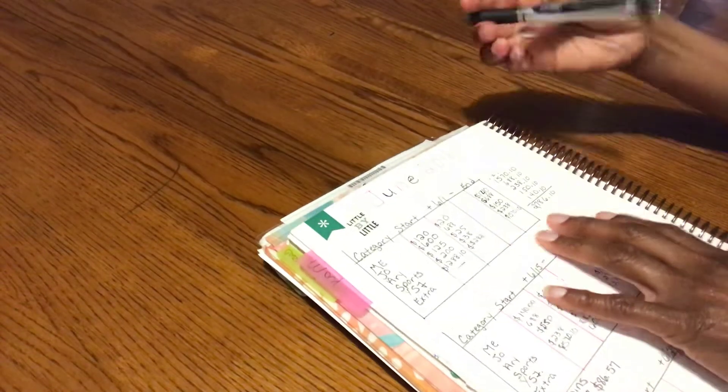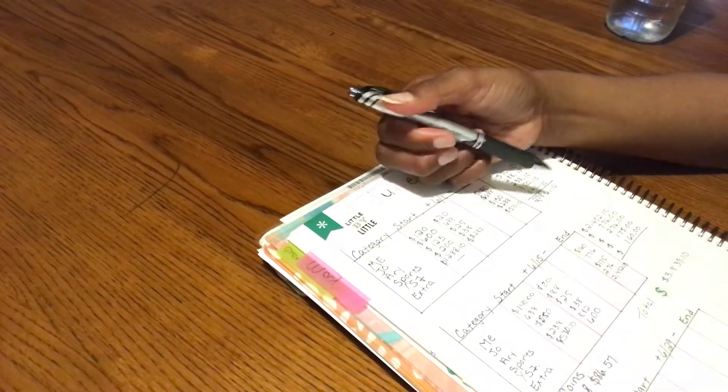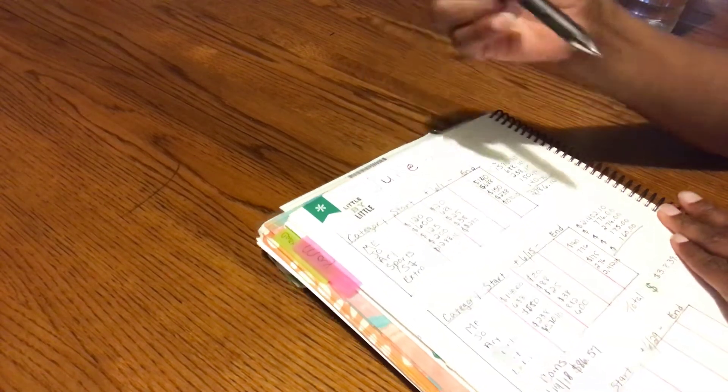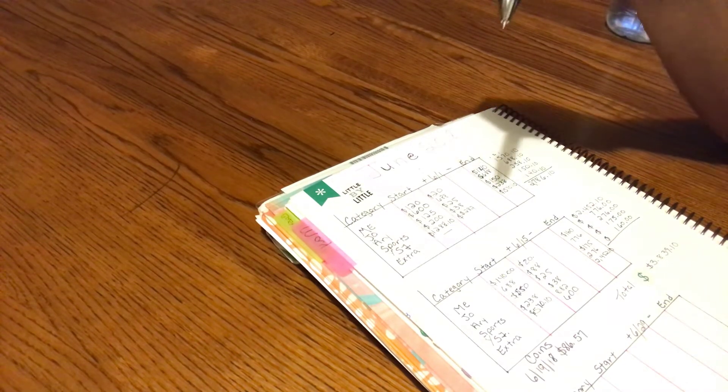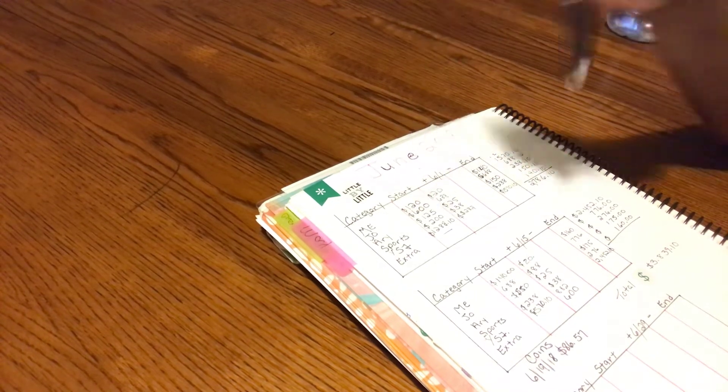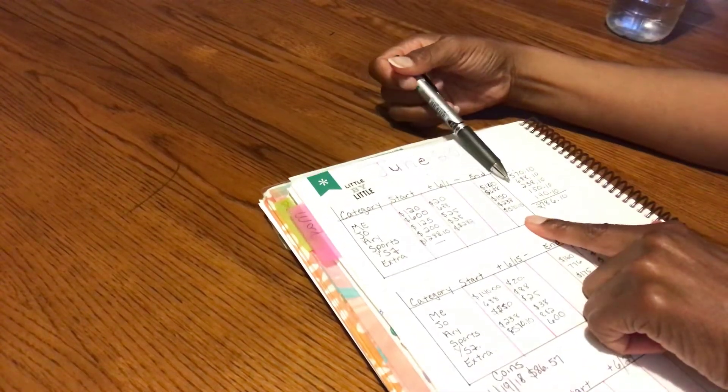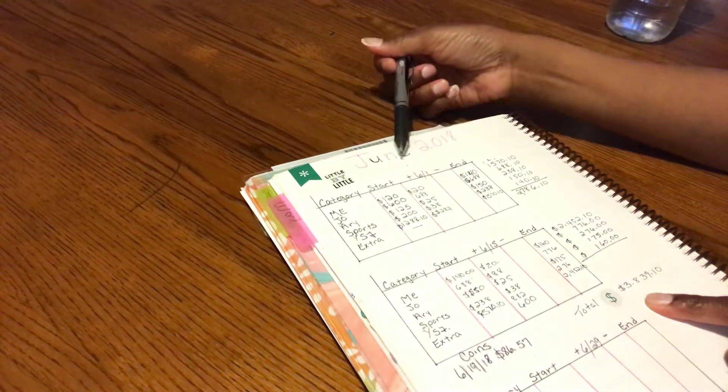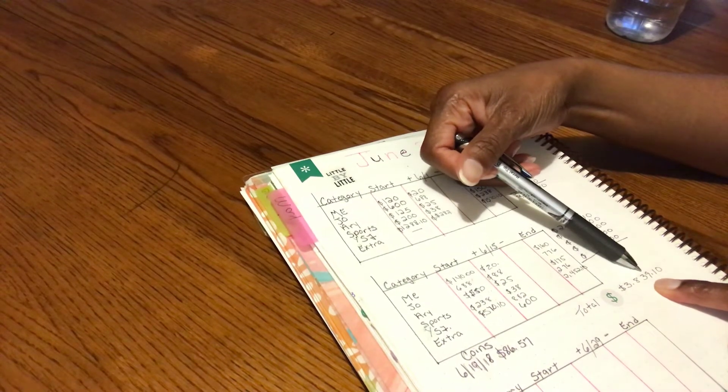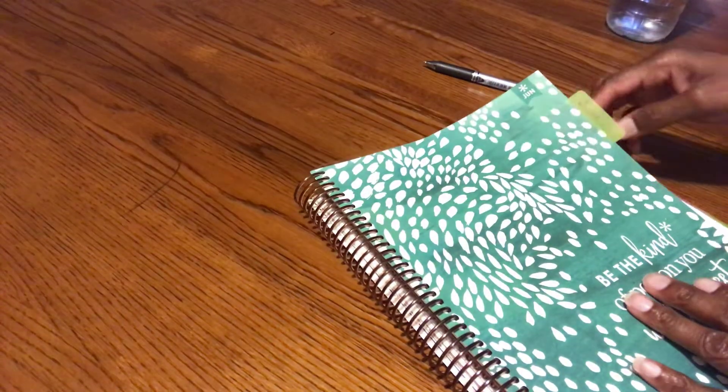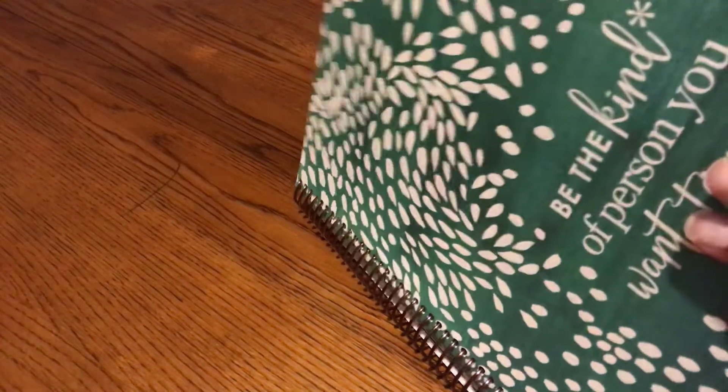For June, I was able to do it again. Each pay period thus far, I have been able to do the $280 plus the $171. The $171 is my summer sinking funds, and the $282 would be my yearly funds. By the end of June, I had $3,839.